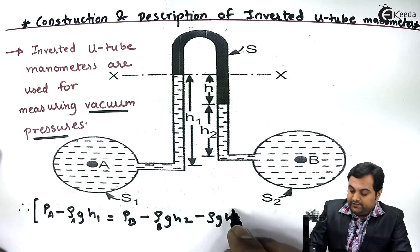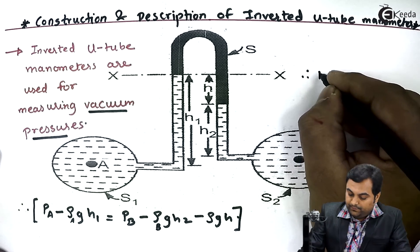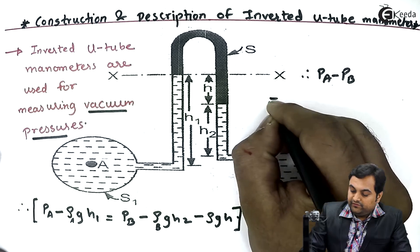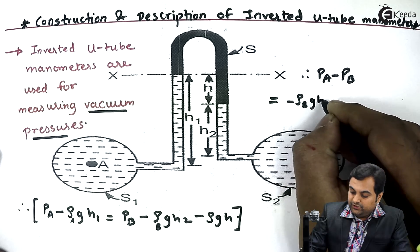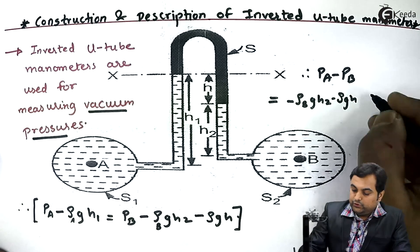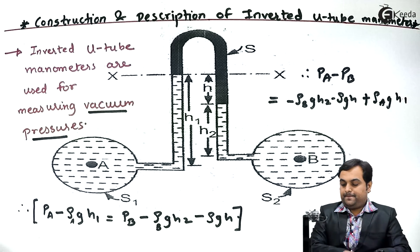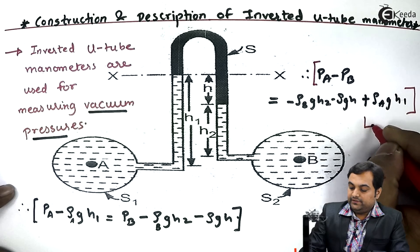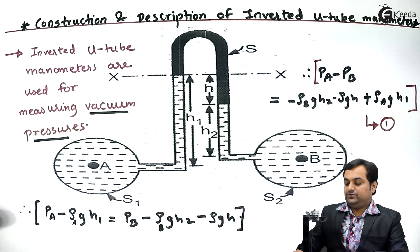Now in order to calculate the pressure difference, we can write: pressure in A minus pressure in B equals minus rho_b × g × h2 minus rho × g × h plus rho_a × g × h1. We'll call this equation one. From equation one, we can calculate the pressure difference between the two different pipelines.